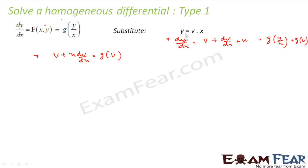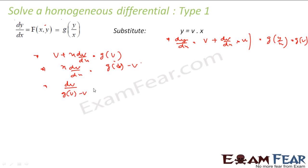The equation we get is: v plus x·dv/dx equals g(v). This is because y equals v times x, so dy/dx gives us this expression, and dy/dx also equals g(y/x). Since y/x is v, we write g(v). Solving further, x·dv/dx equals g(v) minus v, so dv divided by (g(v) minus v) equals dx/x. Integrate both sides to get the solution, then replace v with y/x.